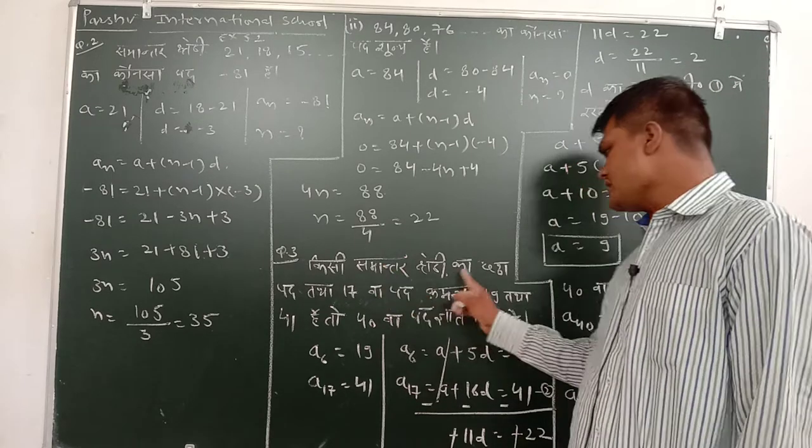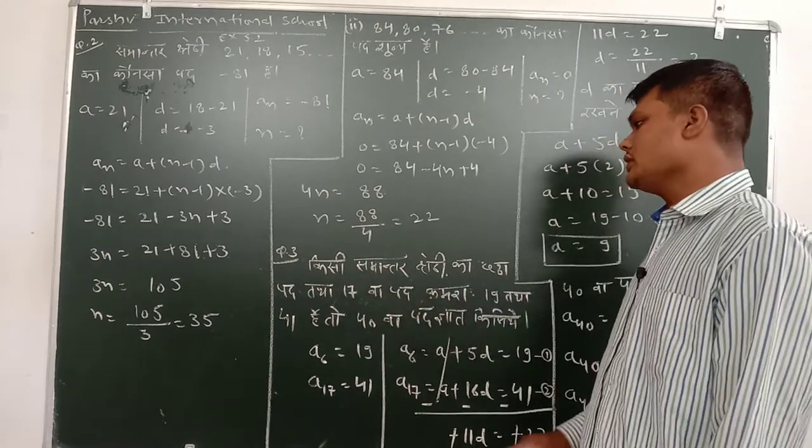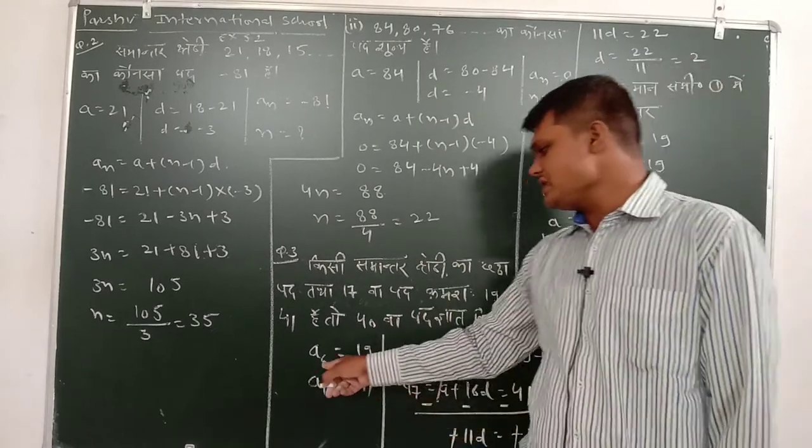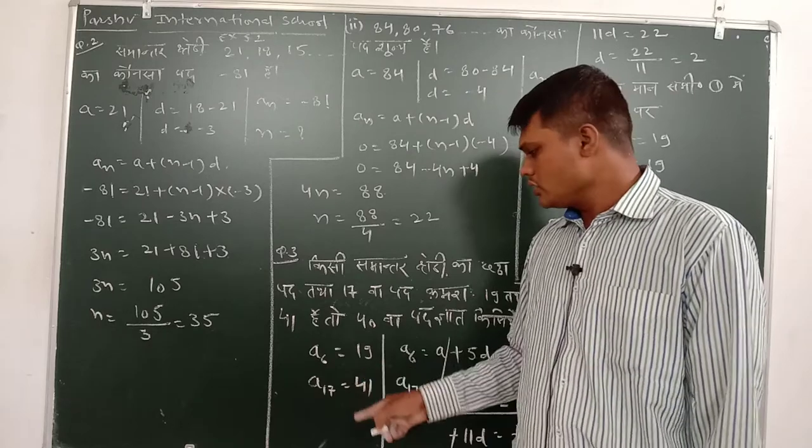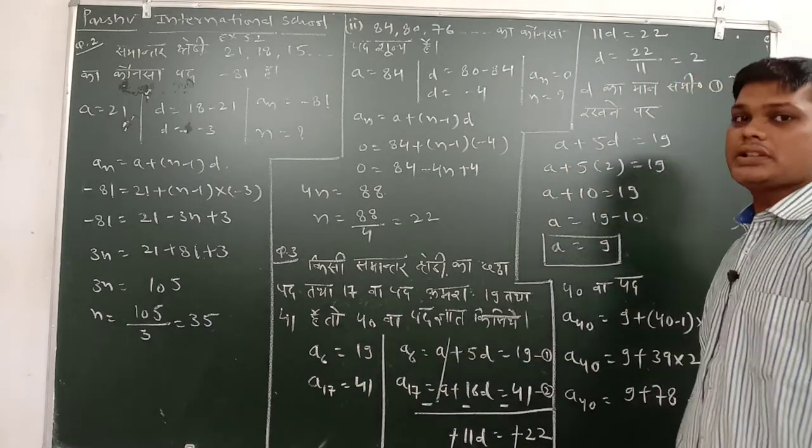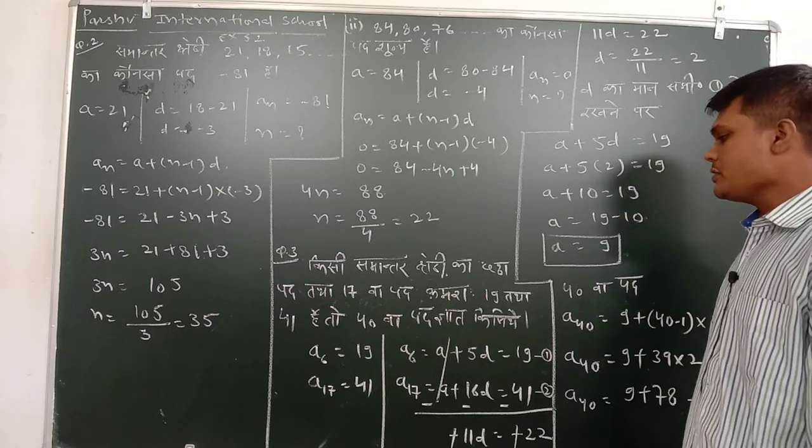Next question: kisi samantar sreni ka 6th pad, 7th 17th pad, krama se ugnis, 7th 41 hai. Matlab a6 ka maan kitna hai ugnis? A17 ka maan kitna hai 41? To 40 wa pad gyat kijiye. Dekho, sabse pahli baat, a6.